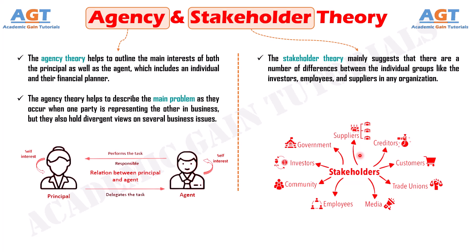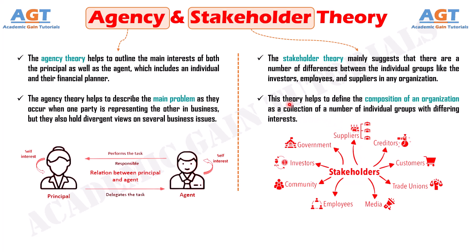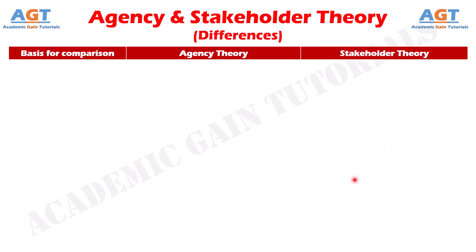This theory helps to define the composition of an organization as a collection of a number of individual groups with differing interests. So, let's look into the basic differences between agency theory and stakeholder theory in a tabular form.